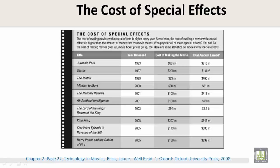Let's look at the title: Jurassic Park. The year released was 1993, and the cost of making the movie was $63 million. The total amount earned was $915 million. Please read the rest of the table in the same way.